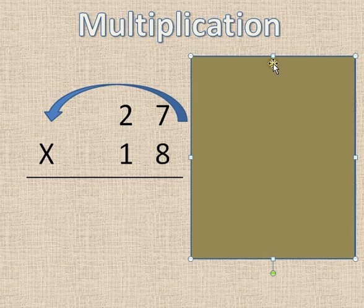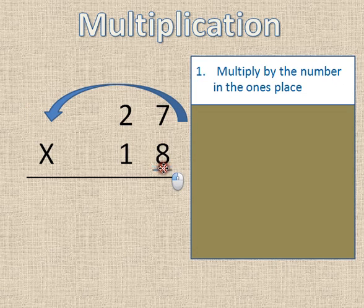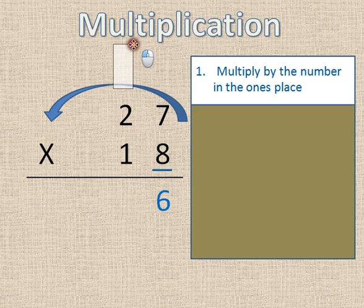So step one is multiply by the number in the ones place. And in this case it's eight. I'll show you what that arrow means when I do that. Eight times seven is fifty-six. So I'm going to put my six down here and underneath the ones place. And my five is going to go up over here, over the number in the tens place because fifty-six is five tens and six ones.